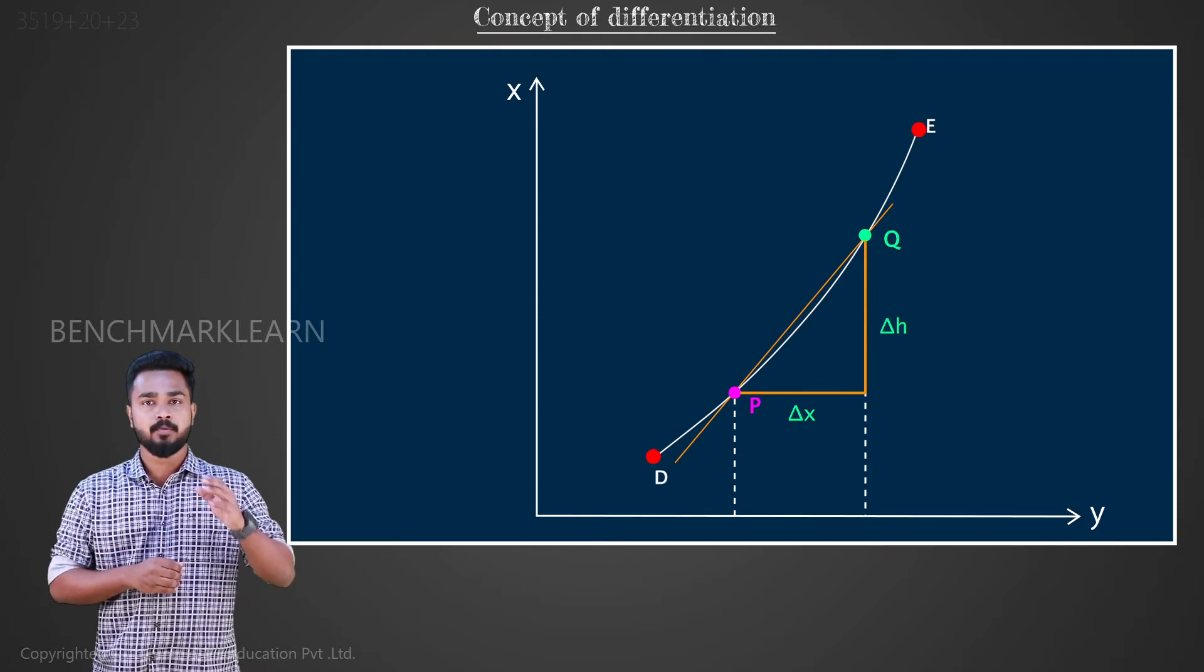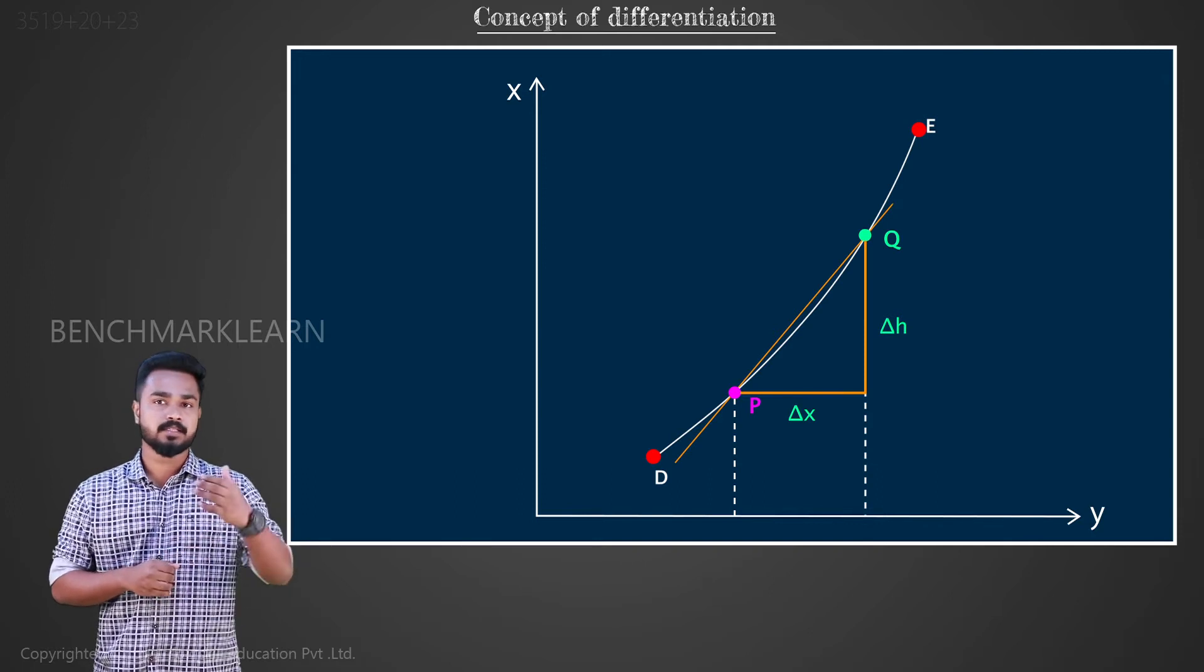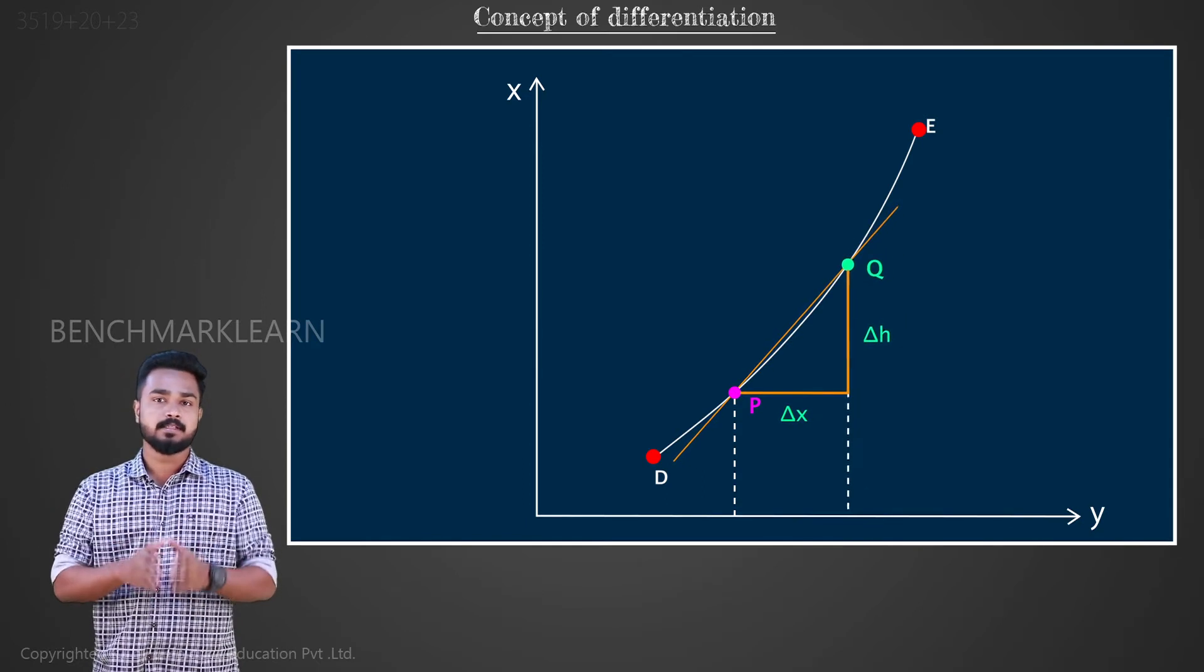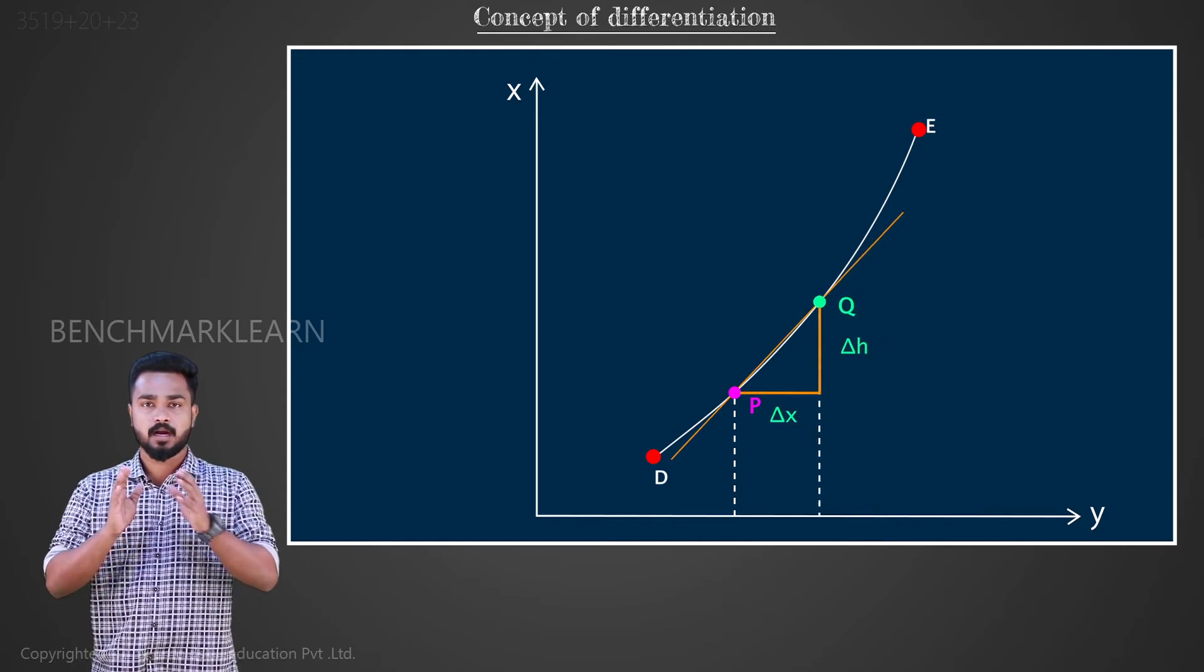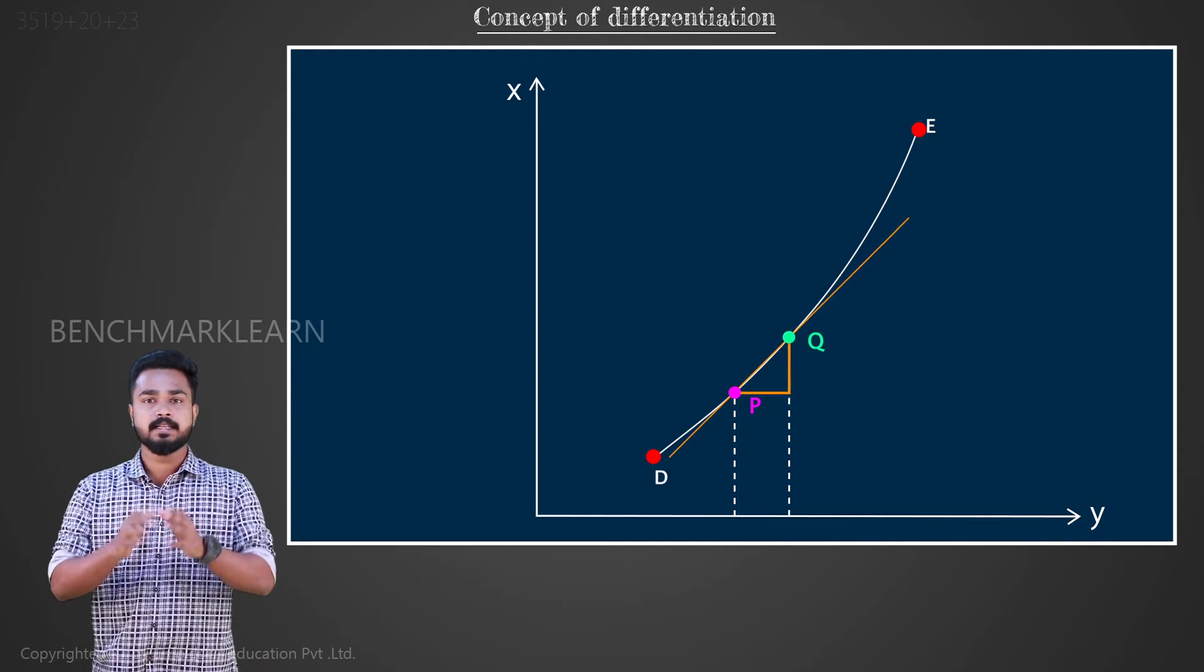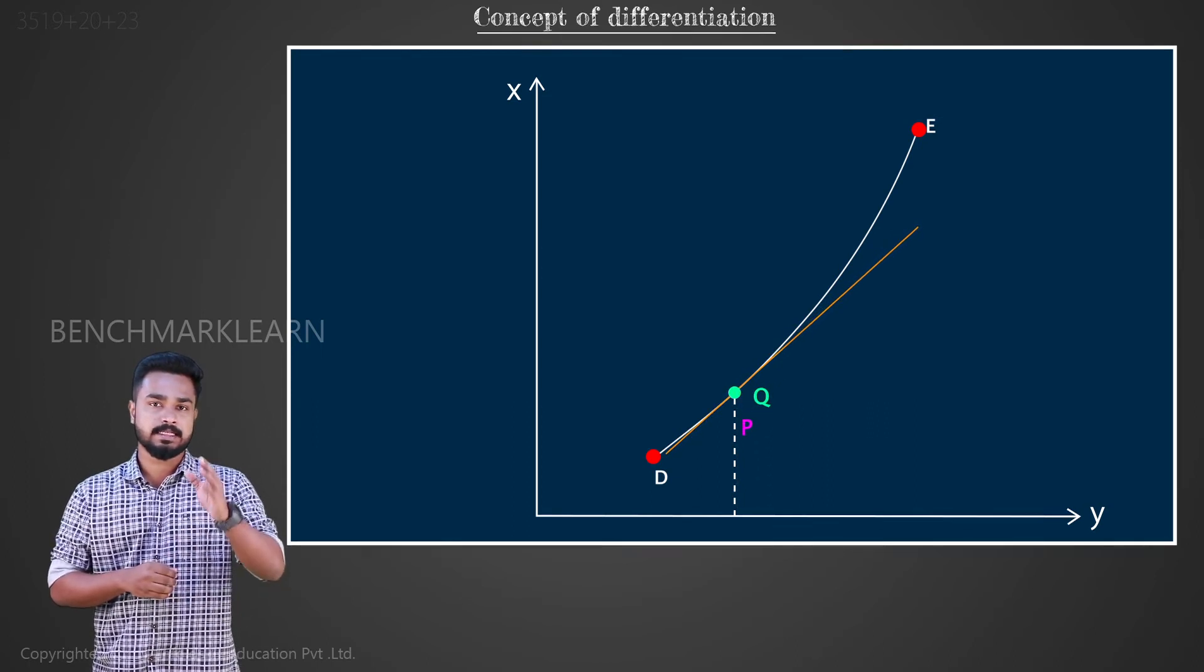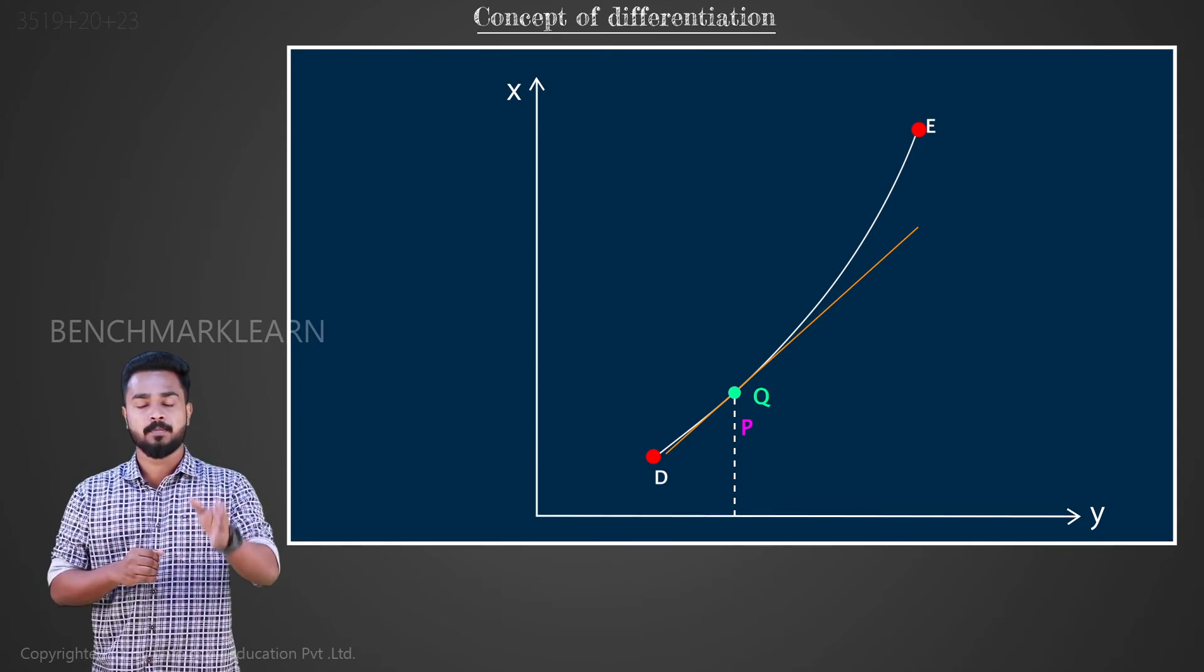Now, to make this slope between P and Q more accurate to the slope at the point P, let's bring the point Q closer to P. In other words, decrease the length of Δx. The closer we go, the more accurate we are. When the distance Δx is very close to 0, the line joining P and Q becomes the tangent at the point P and we get the real slope at P.